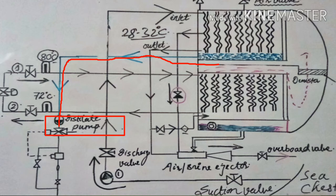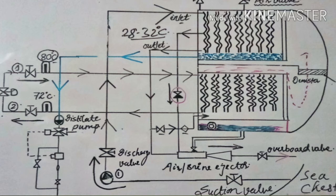Start the distillate pump and open the discharge valve to lead generated water to the specified storage tanks. Now the fresh water generator is in running condition. Do regular checks such as evaporator pressure, condenser pressure, flow meter reading, and salinity content — all these things we have to continuously check.